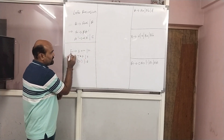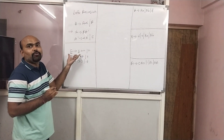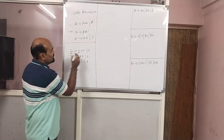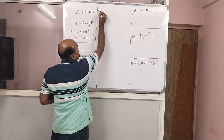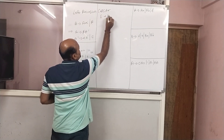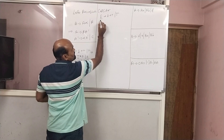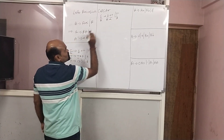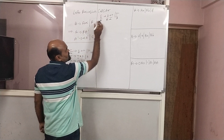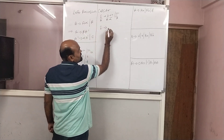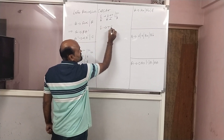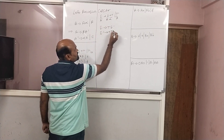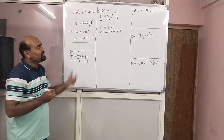We will consider one example. Here we have E gives E plus T slash T. The first E and the second E are the same, so this is our left recursion. According to the formula: A is E, alpha is plus T, beta is T. So the solution is: E gives T E-dash, and E-dash gives plus T E-dash slash epsilon. We have removed the left recursion.